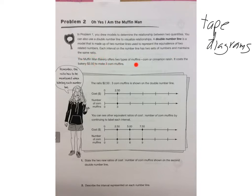So you have this Muffet Man problem, which has two types of muffins: corn or cinnamon raisin. It costs the bakery $2.50 to make three corn muffins. The ratio of $2.50 to three corn muffins is shown on the double number line — cost zero to zero, and then $2.50 to three. They have these two number lines lined up where $2.50 is equal to three, labeled cost and number of corn muffins.